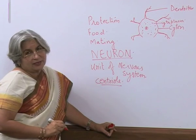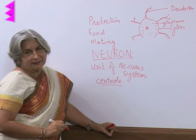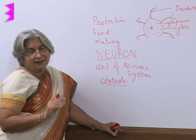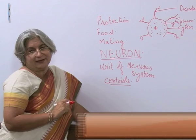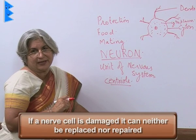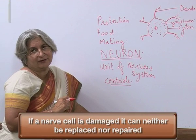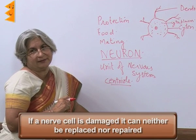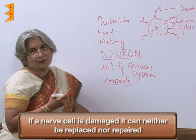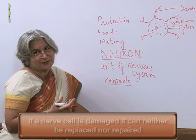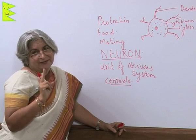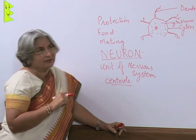So what is the result? It cannot divide. That is why if a nerve cell is damaged, it can neither be replaced nor repaired. It is just a total loss. So, nerve cells are very important.